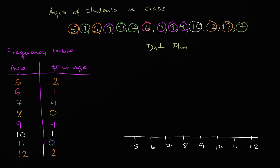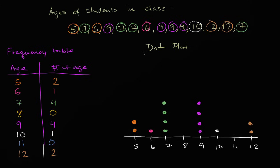We use a dot to represent each student at that age. There are two five-year-olds, so I'll put two dots. There's one six-year-old, so that's one dot. There are four seven-year-olds: one, two, three, four dots. There are no eight-year-olds. There are four nine-year-olds: one, two, three, and four. There's one ten-year-old, so one dot there. There are no eleven-year-olds. And then there are two twelve-year-olds.